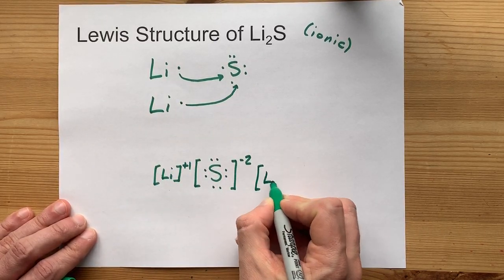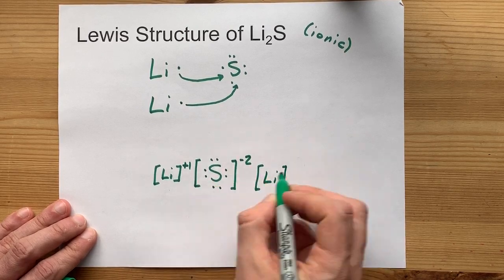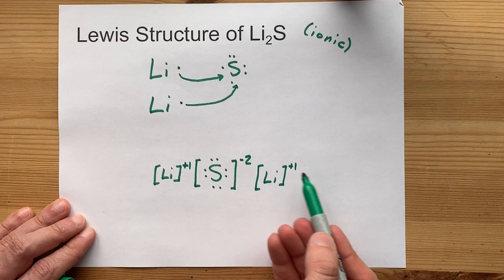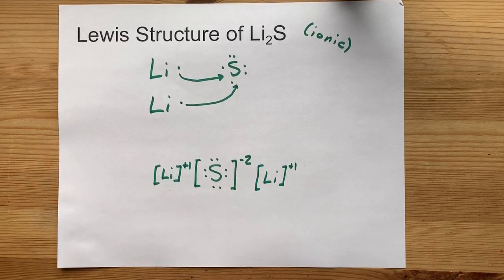I'm going to draw a second one because we needed a second lithium to give away its electron to complete that octet. And we have the complete Lewis structure for lithium sulfide.